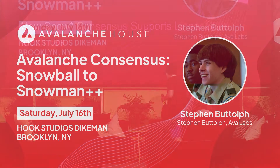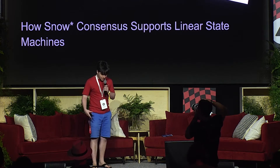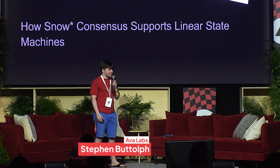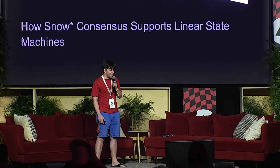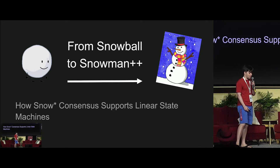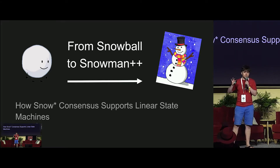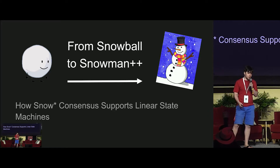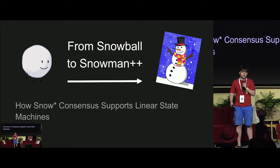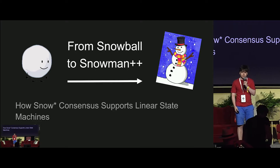Thank you very much. I was told to dress up for this today, so I got my presentation flip-flops on. I also got my water here in case I get thirsty — repeat Patrick's amazing water presentation. Today I'm going to be talking about how Avalanche consensus works, specifically for Snowman chains. I'm going to try to go all the way from Snowball consensus through to Snowman++. I won't go too deep into the weeds, but hopefully it will give a high-level explanation of how the core protocol works.